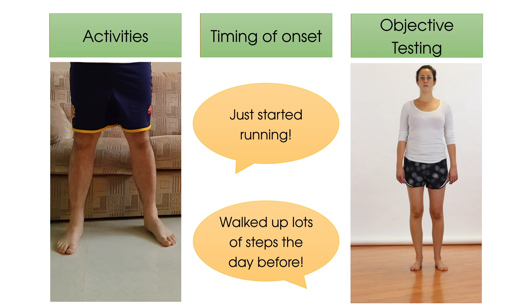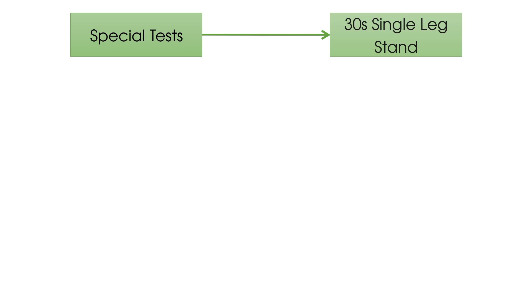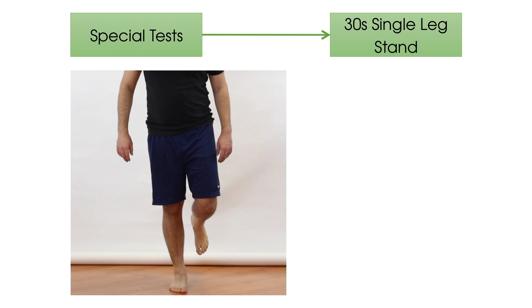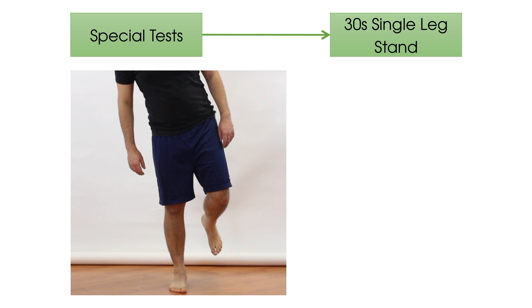Now, recent reviews of gluteal tendinopathies have looked at a series of tests that can be used for diagnosis. Firstly is the 30-second single leg stance on the affected leg, where reproduction of lateral hip pain on that leg is a positive sign. Your patient may try to displace their trunk laterally, which offloads the gluteal tendons — the hip then goes into more of an abducted than an adducted position.